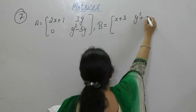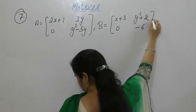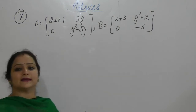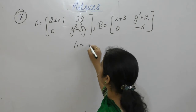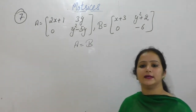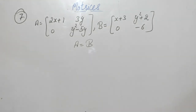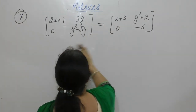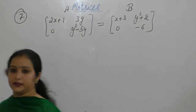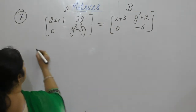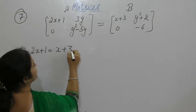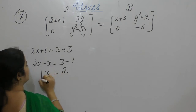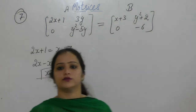Given matrices A = [2x+1, x+3; y², 2; 0, -6] and B are equal, we need to find values of x and y. When two matrices are equal, their corresponding elements are equal. Equating elements: 2x + 1 = x + 3, so 2x minus x = 3 minus 1, giving x = 2.